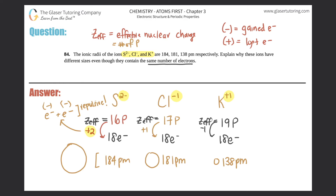When electrons repel each other they try to go to opposite ends, giving a bigger radius because they want to be as far apart as possible. The more negative the ion, the higher the radius — because electrons repel and stretch the atom, making it bigger. So gaining electrons means repulsion and atomic radius increases.